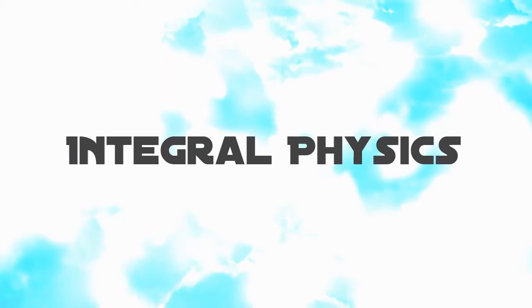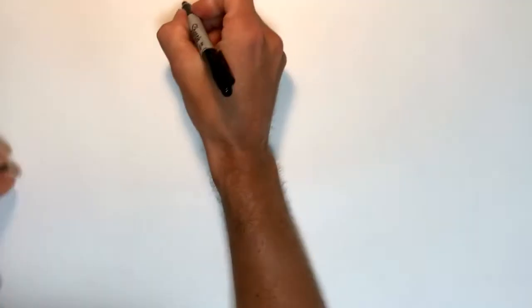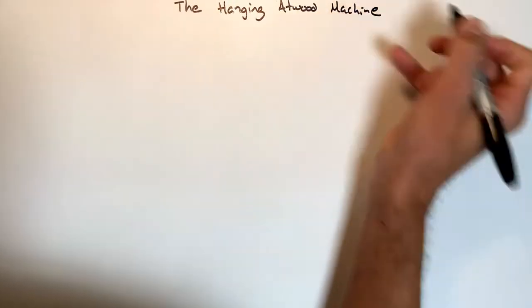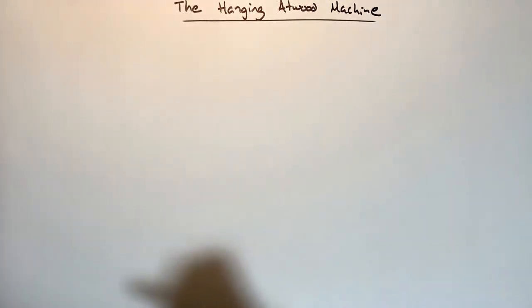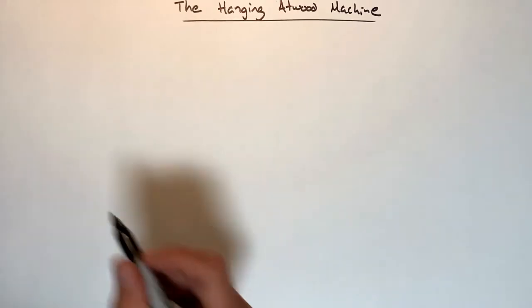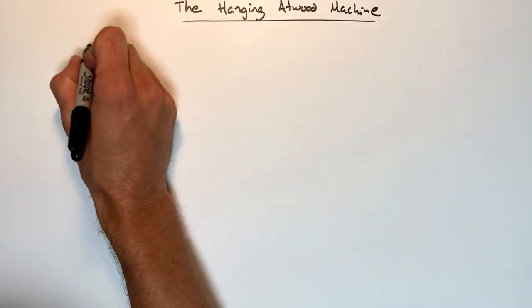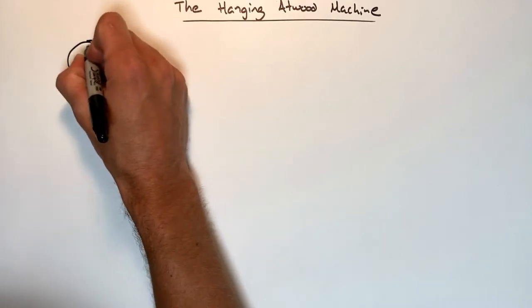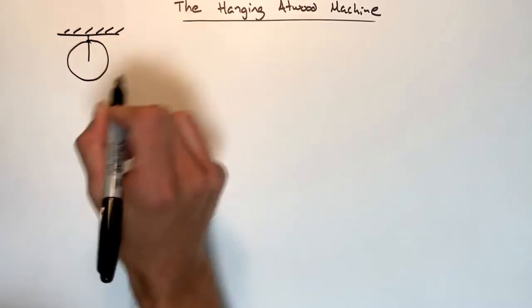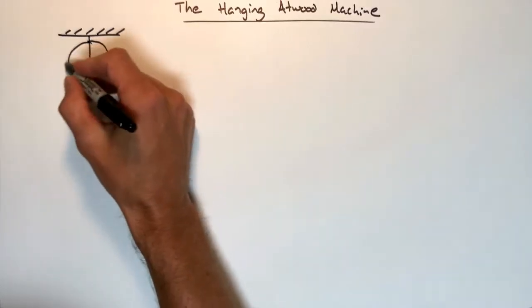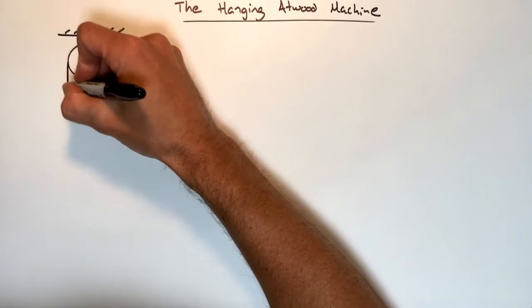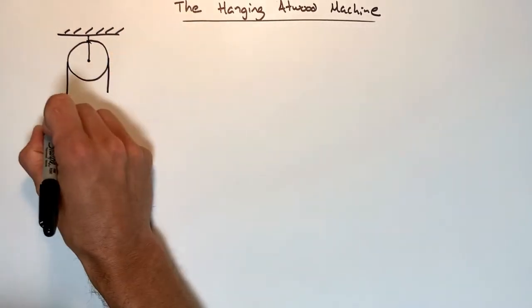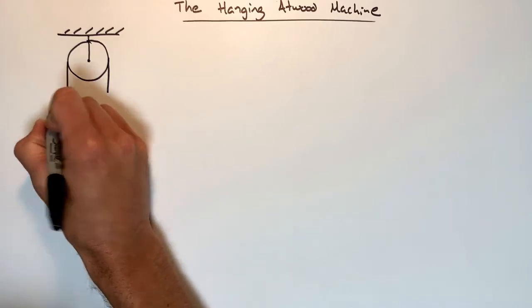This is called the hanging Atwood machine. There are a lot of variations of this problem, but we're going to do the most basic version. You take a pulley hanging from the ceiling — this pulley has no friction on the axle and no mass. We take a massless string and run it over this pulley.